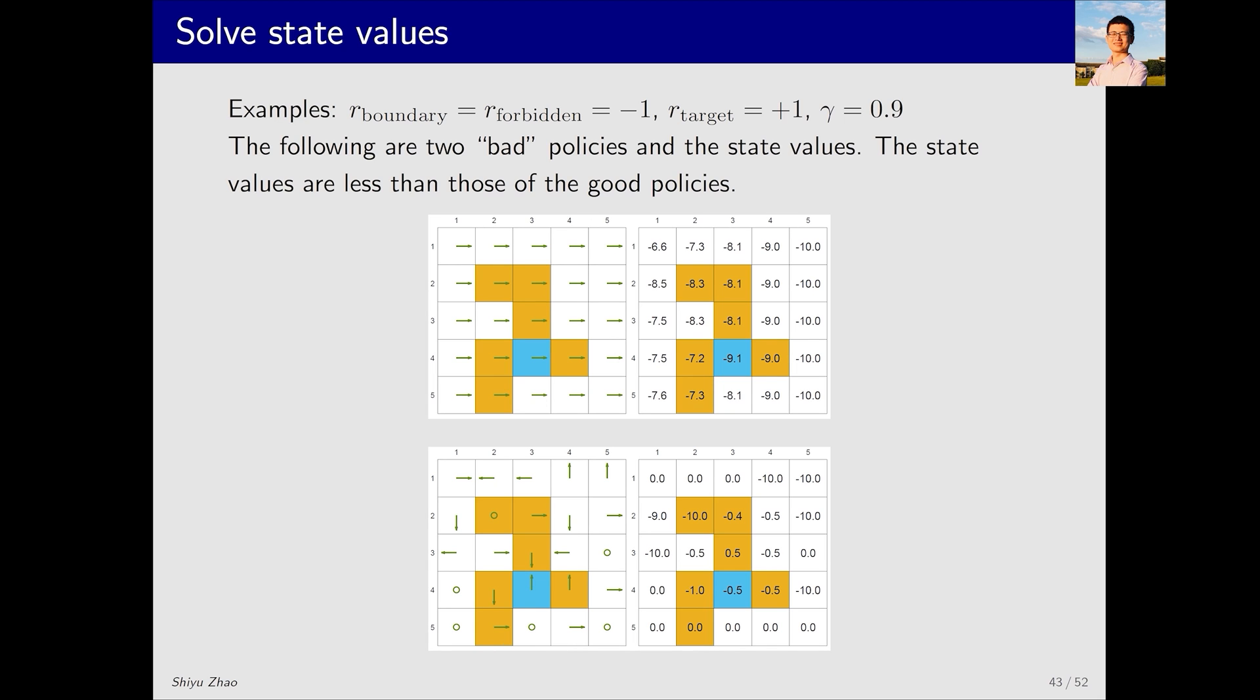After considering two good policies, let's examine two bad policies. The first policy involves moving right in every state, clearly unreasonable, resulting in entirely negative state values. This indicates that this policy is bad. This is a randomly generated policy, whose actions often lead to collisions with walls or entry into the forbidden area. It is intuitively a bad policy. The calculated state values align with our intuition. Through these examples, we can clearly see that calculating state values allows us to effectively evaluate whether a policy is good or bad.